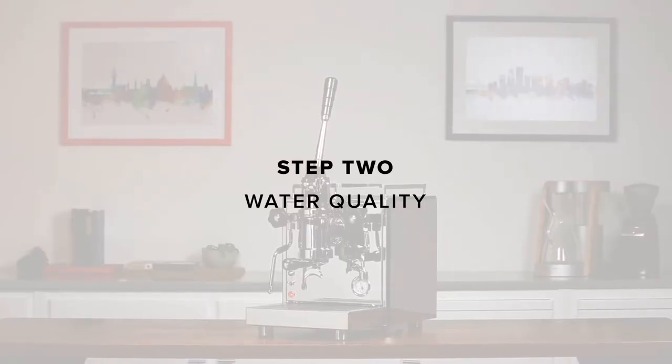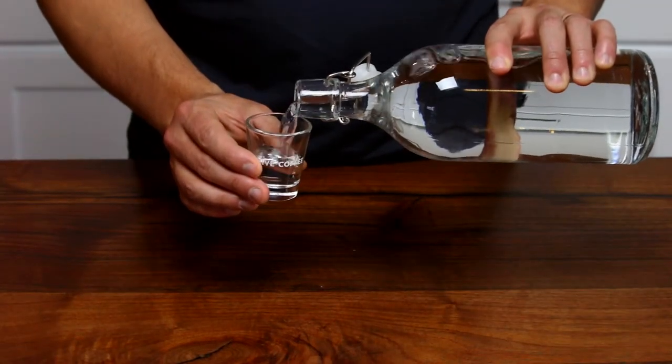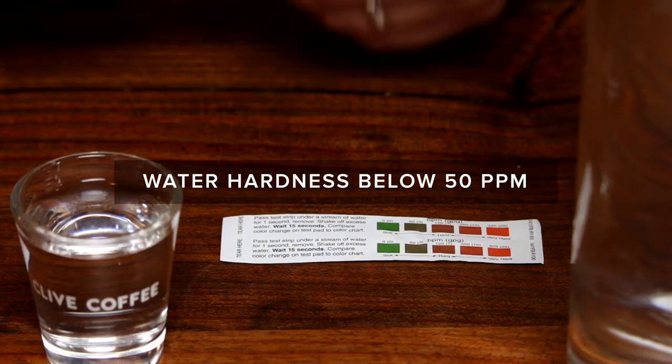Step 2. Water Quality. Before introducing any water to the machine, it's important to test it to make sure it's adequately soft. Use the included water test strip to verify the softness of your water. Ideally, we're looking for a softness below 50 particles per million.